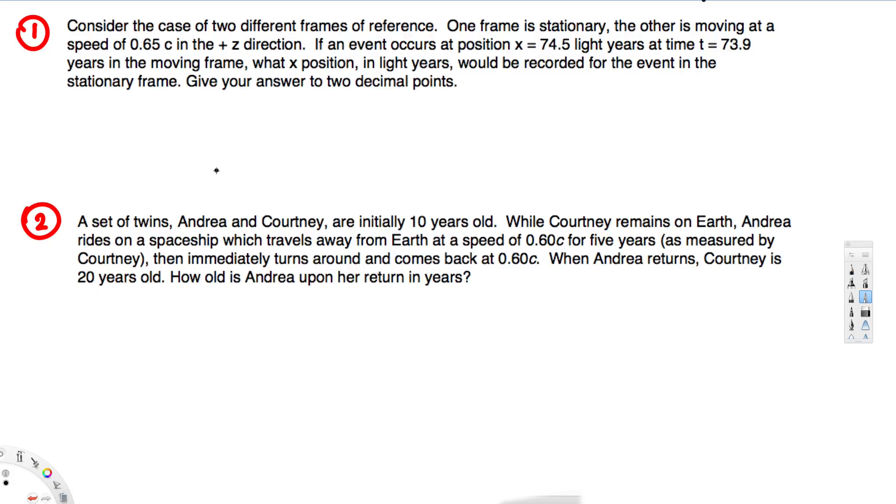Let's see how we can find it. First, you have to know that since the frame is stationary, the position where the event occurs is the same as the position in the stationary frame. It does not affect the other frame. So the position of the event in the stationary frame is x = 74.5 light years. That's our answer: 74.5 light years. Let's look at the next question.